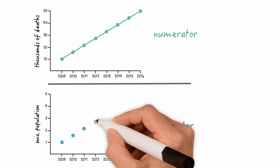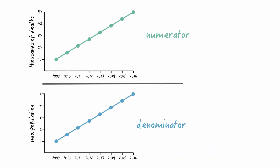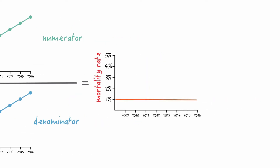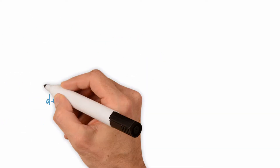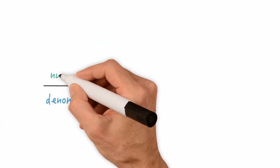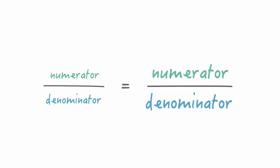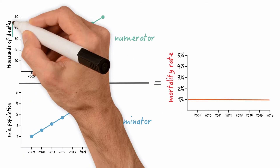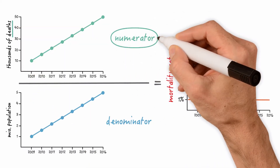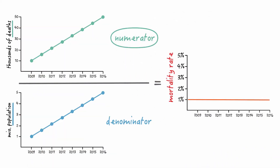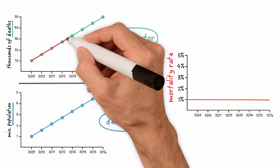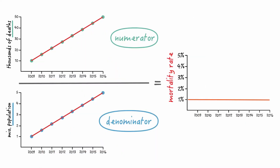So if the population increased at the same pace, the death rates would have essentially stayed the same. If the denominator increases to the same extent as the numerator, the relationship stays the same and the rates would stay the same. The absolute number of deaths is the numerator and the population is the denominator — if those two increase proportionally, the rate stays the same. So you see, absolute numbers are not an indication of mortality risk, but rates are.